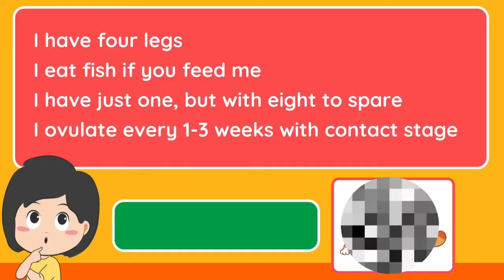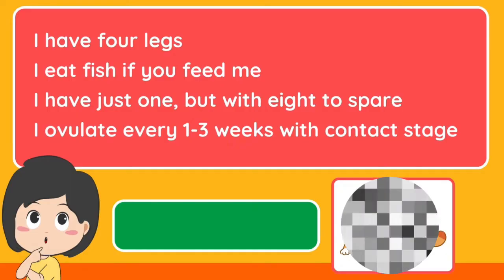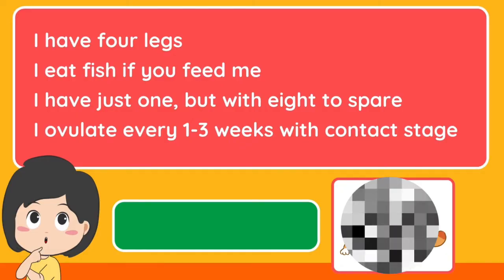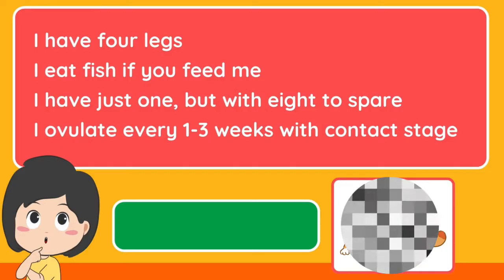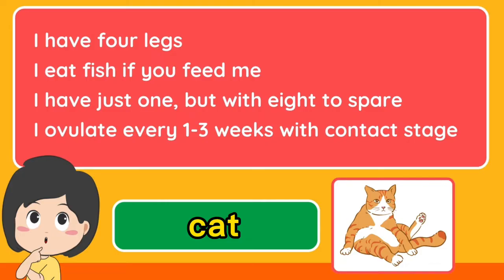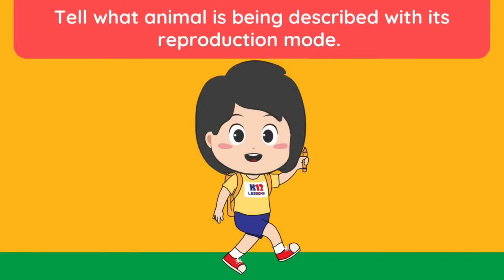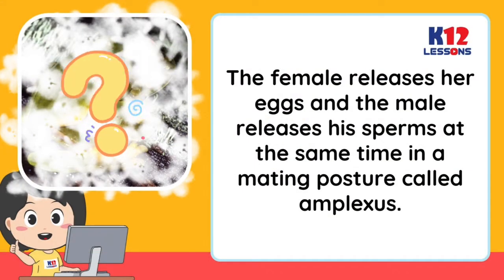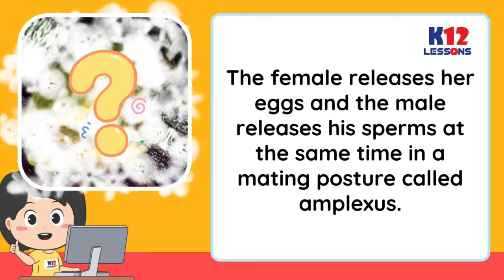I have four legs. I eat fish if you feed me. I have just one life but with eight to spare. I ovulate every one to three weeks with contact. What am I? — Tell what animal is being described with its reproduction mode. The female releases her eggs and the male releases his sperm at the same time in a mating posture called amplexus.